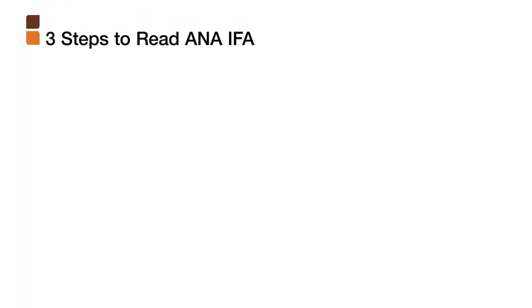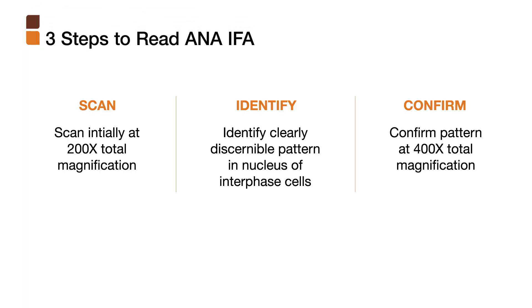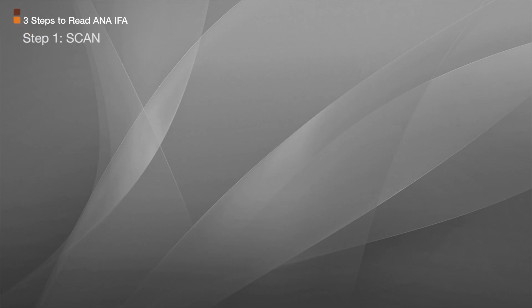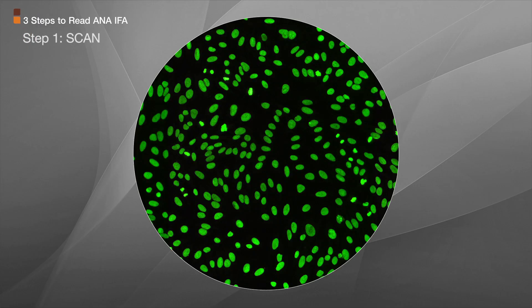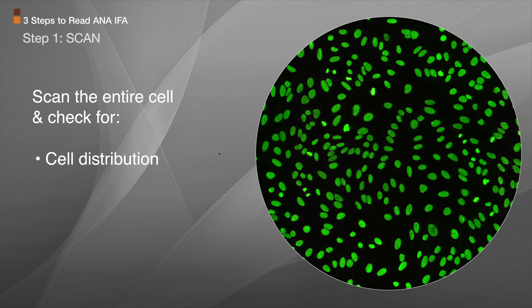So let's hold on to this information and simplify reading ANA-IFAs by breaking it down into three steps. Step 1: Scan the entire well and check for cell distribution, cell morphology, and the uniformity of fluorescence.